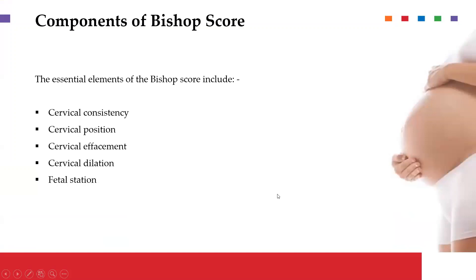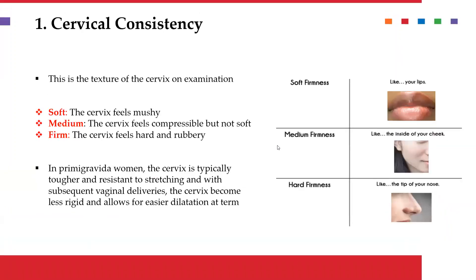The main components of the Bishop score are five: the cervical consistency, the position of the cervix, dilatation, how effaced the cervix is, and finally, the fetal station.